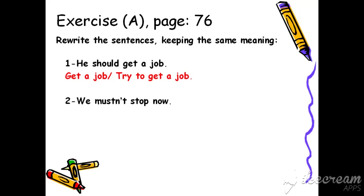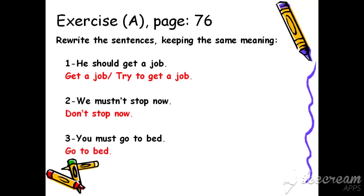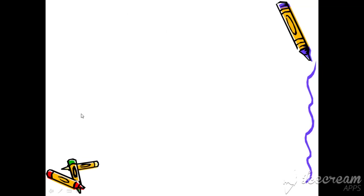'We mustn't stop now' — يعني إحنا ما لازم نوقف الآن. When we want to change it into imperative, لأنه معطينا negative — mustn't — فبحكي 'Don't stop now'. 'You must go to bed' — 'Go to bed'. 'You should get up early' — 'Get up early' أو ممكن 'Try to get up early'.